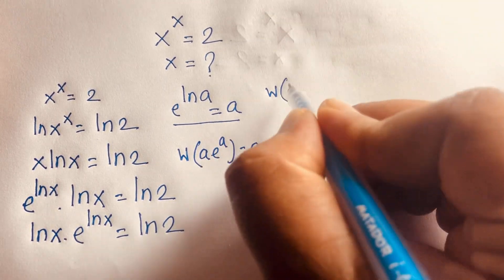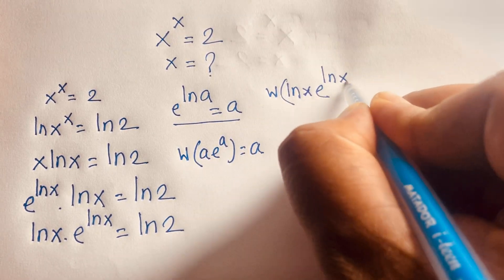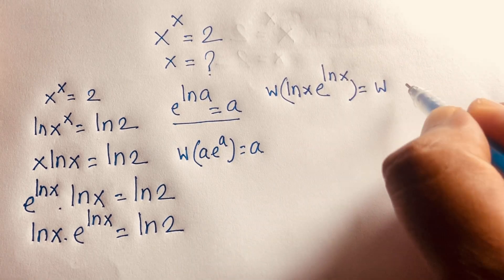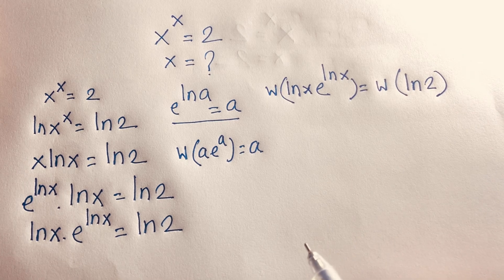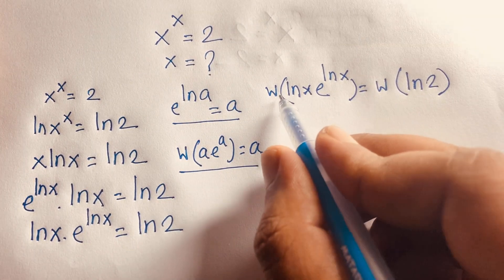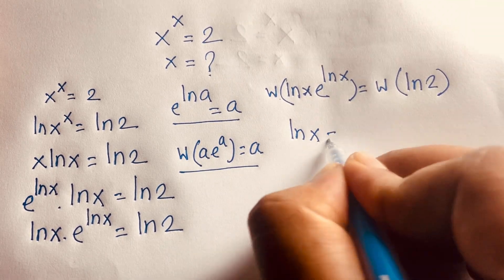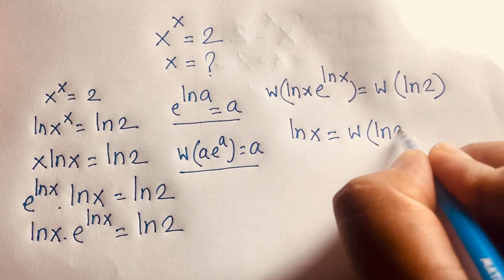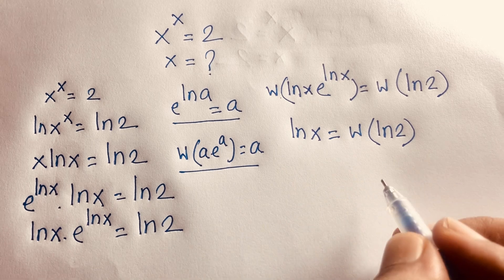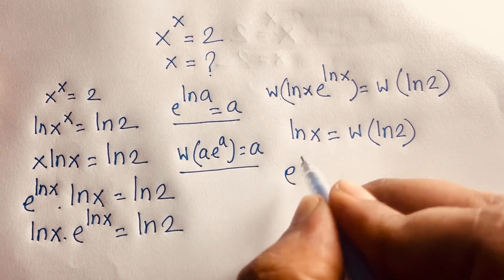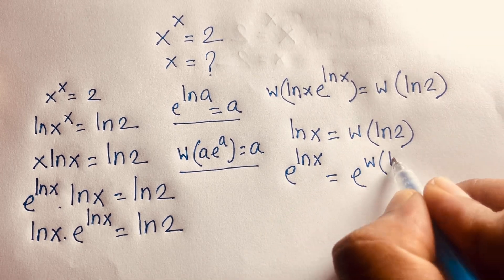Applying W to both sides: W(ln(x)·e^(ln x)) equals W(ln 2). According to the Lambert W identity, W(ln(x)·e^(ln x)) simplifies to ln(x). So we have ln(x) = W(ln 2). Now applying e to both sides, e to the power ln(x) equals e to the power W(ln 2).